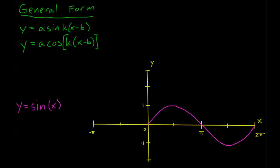Now this is my general form. We've already talked about a couple of things. We know that a determines my amplitude of the function. k determines my period — we know that 2π over k is the period of this graph. And now we have this new part, x minus b, where it used to just be x. With this x minus b, we have a horizontal shift of b.